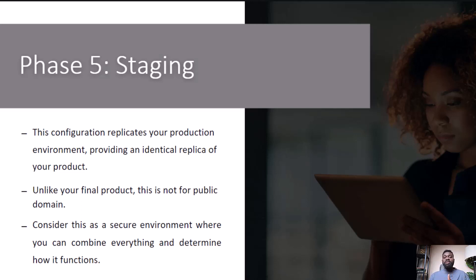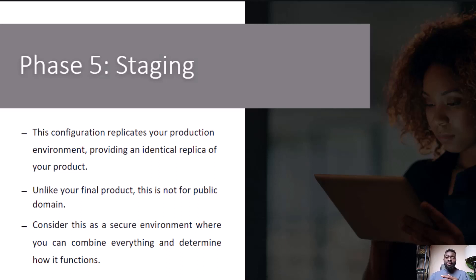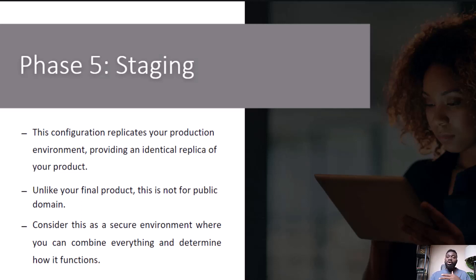Key functions of staging — Testing: developers and quality assurance teams use the staging environment to conduct various types of testing, including functional testing, integration testing, performance testing, and security testing. These help identify and resolve issues or bugs before they reach the production environment.